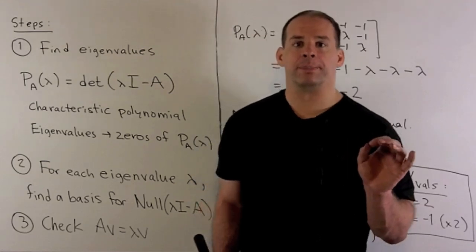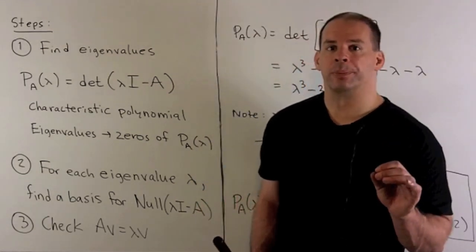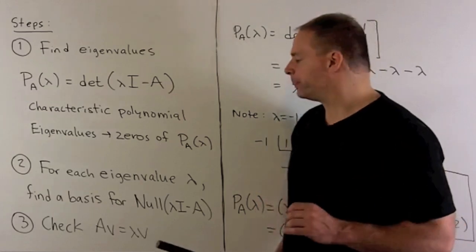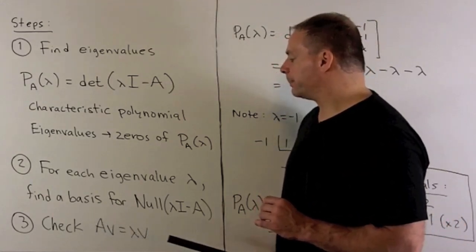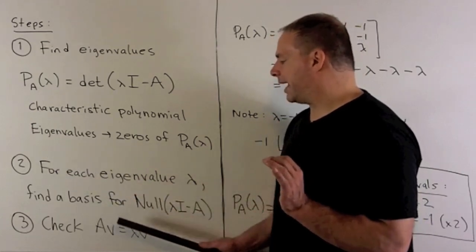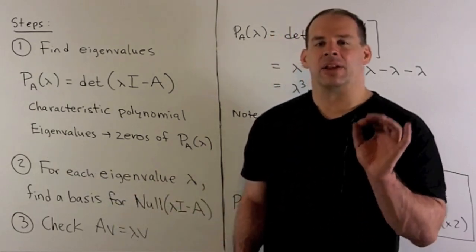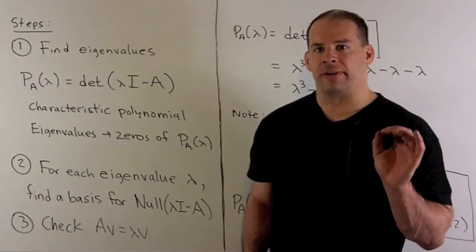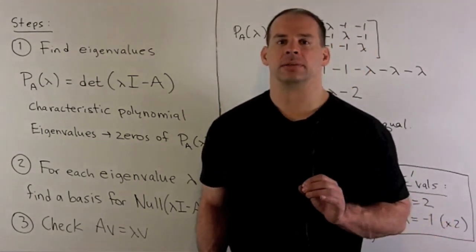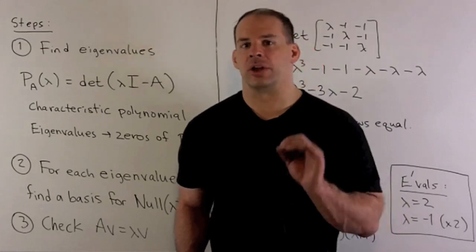Now, we're not done yet. We should check our work. How do we do that? Well, we use the characteristic equation A times V equals lambda V. So we're going to take each vector in part two, apply A to it. We're expecting to get the eigenvalue times the original vector back. If that holds up, then your work is checked. Let's take a look at our special case.